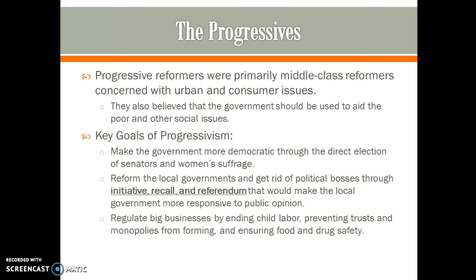Progressive reformers were primarily middle-class reformers concerned with urban and consumer issues. They wanted to protect immigrants and protect consumers buying from big businesses, which they felt were taking advantage of consumers. They also believed the government should be used to aid the poor and address other social issues — welfare as we know it did not exist yet. There are three main goals of progressivism.